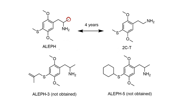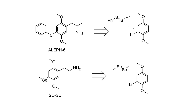A few more Alephs were synthesized, but some couldn't be obtained for various synthetic reasons. Aleph-3, the methyl thiol derivative, was never made because the chemistry simply didn't work. In the case of Aleph-5, the cyclohexyl derivative, Shulgin got as far as the nitrostyrene and describes leaving the oil to stand for several months while it crystallized, but for whatever reason he never reduced it to the amphetamine product.